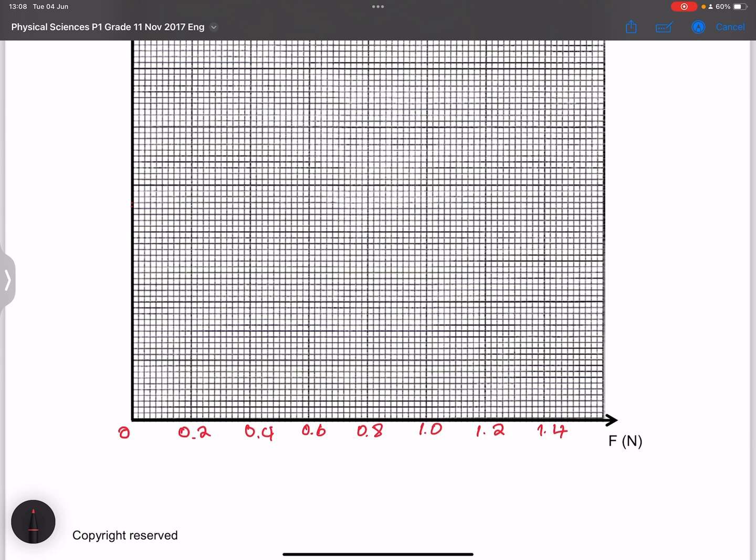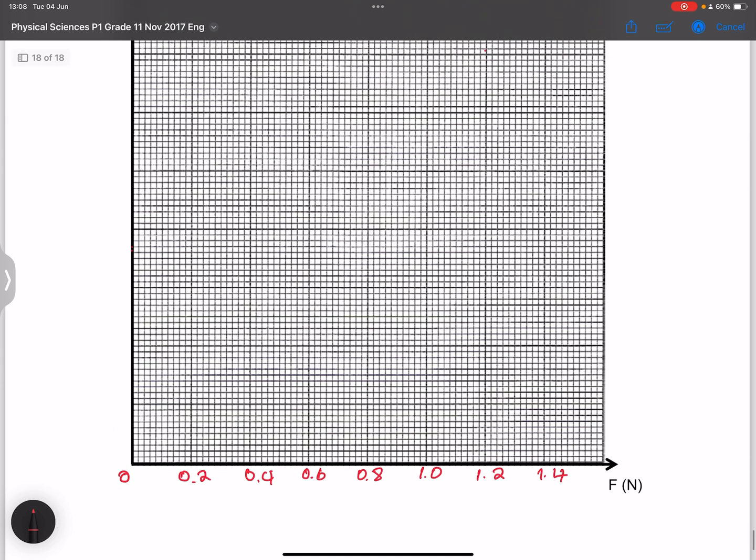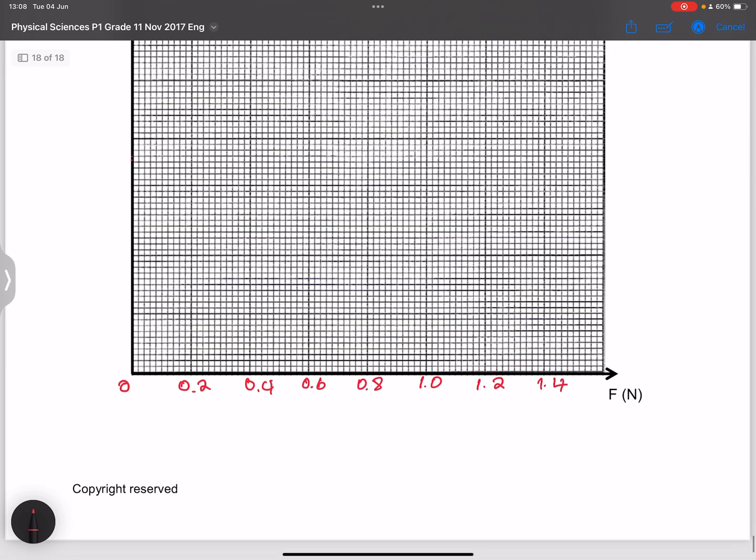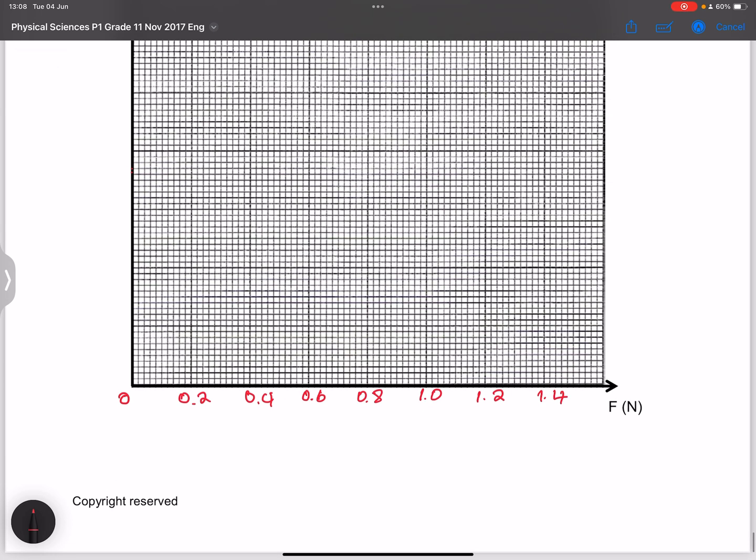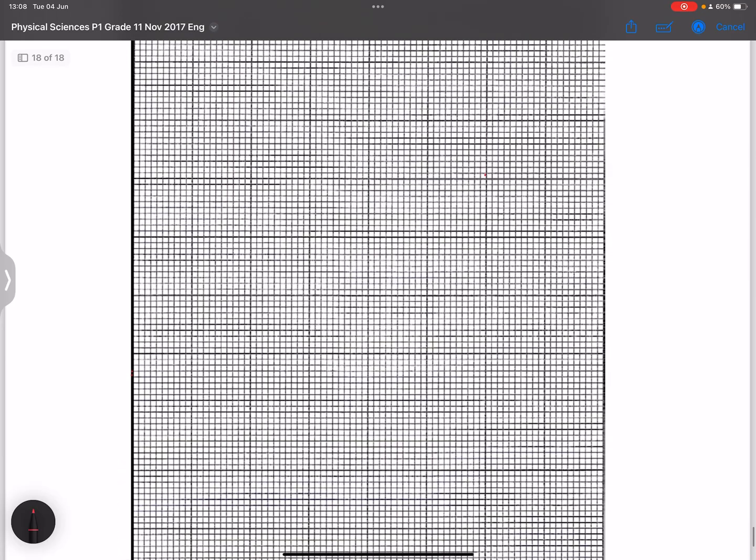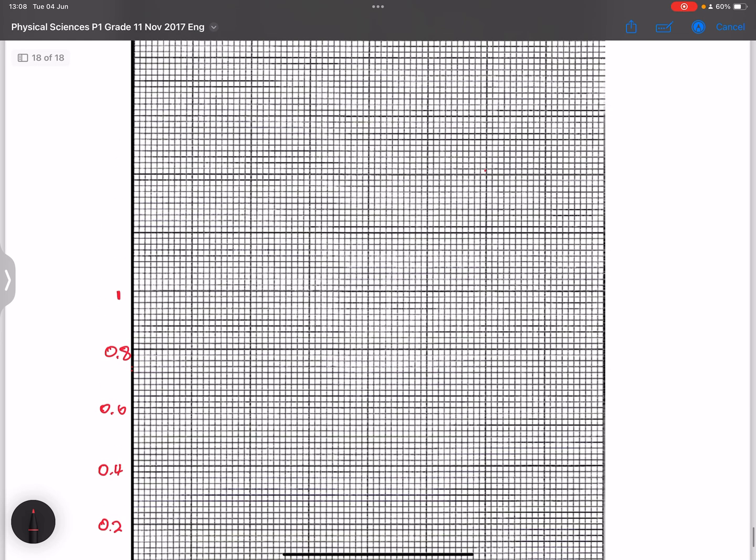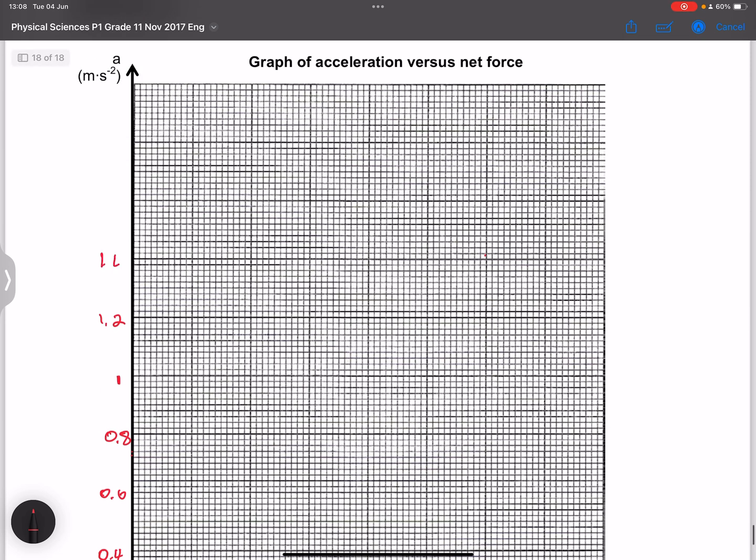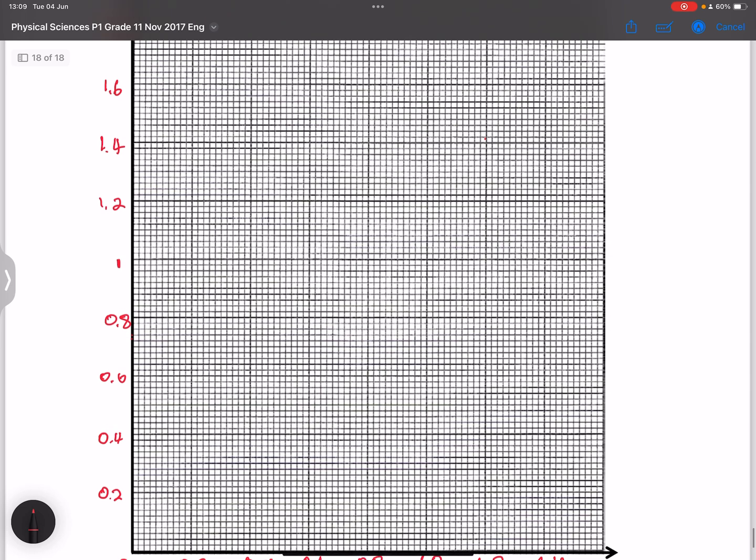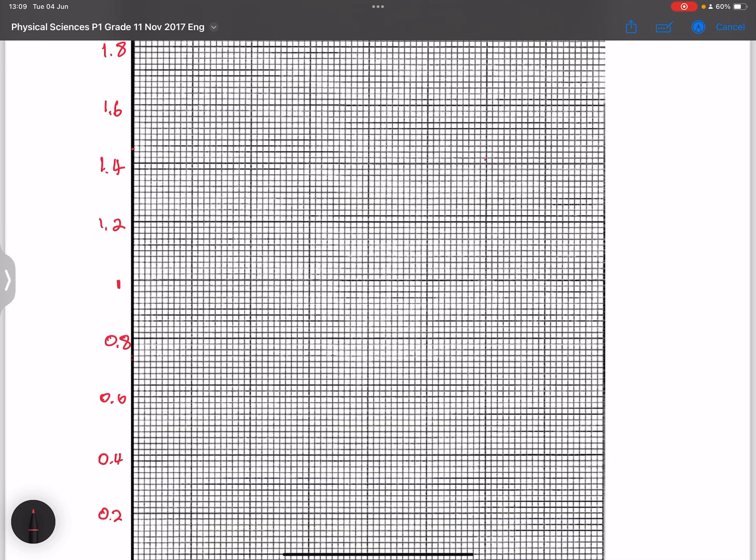Now, equally so, when you look at your force values, rather your acceleration values. So your values are 0.36, 0.73 up until 1.45. So I think just to make it easy as well, I'm going to choose 0.2 as well as a scale there. 0.2, 0.4. 0.6, 0.8. That's 1.2, that's 1.4, 1.6, and 1.8. We know we're only going up until 1.45, which should be somewhere over there.